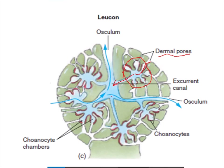The excurrent canals in the Leucon type have multiple exit points — more than one osculum is used for the movement of water outward. Water enters through dermal pores to incurrent canals, then to choanocyte chambers, then to excurrent canals, and exits through multiple oscula. Due to this extensively branched system, the spongocoel is absent in the Leucon type.